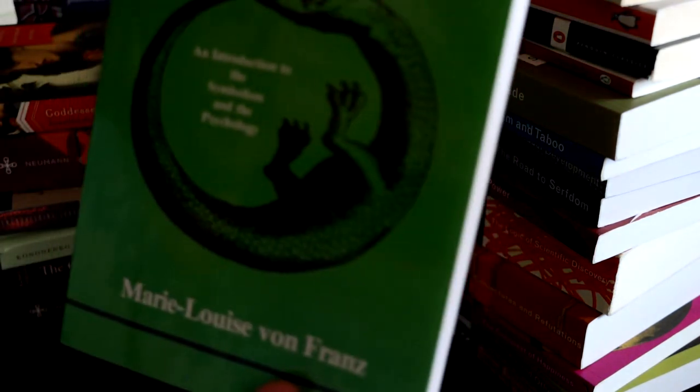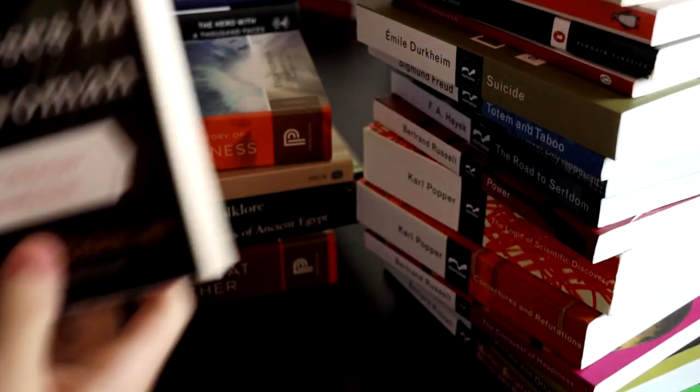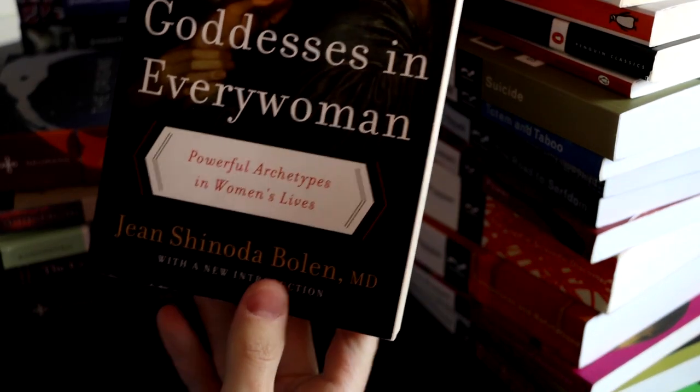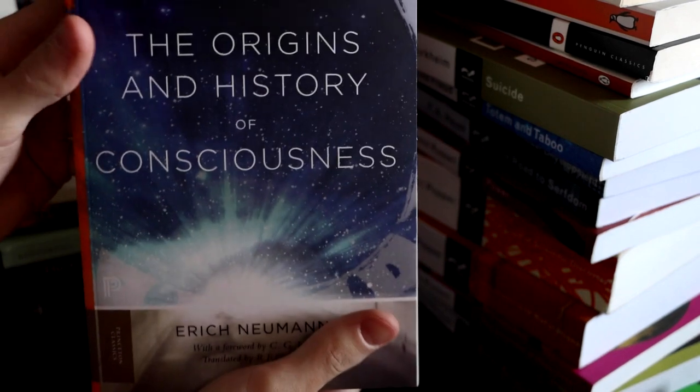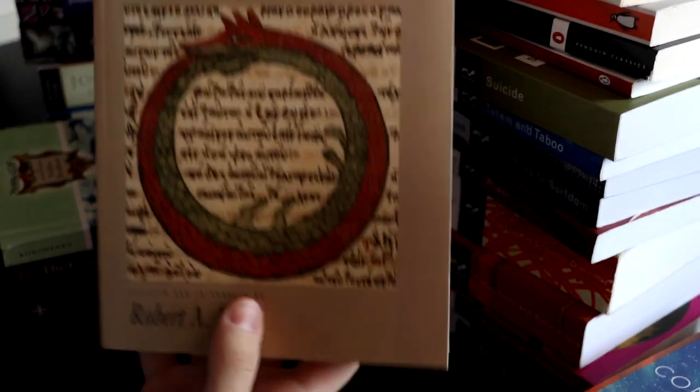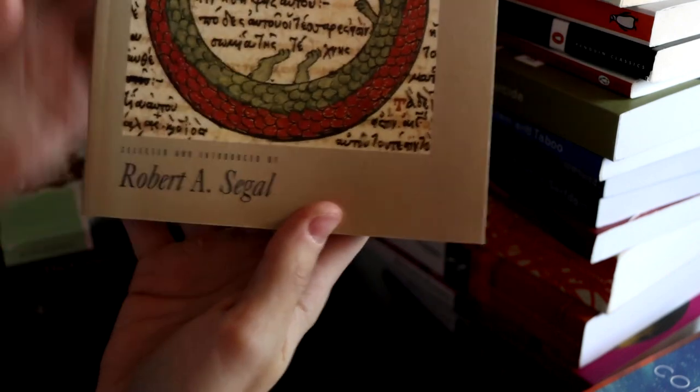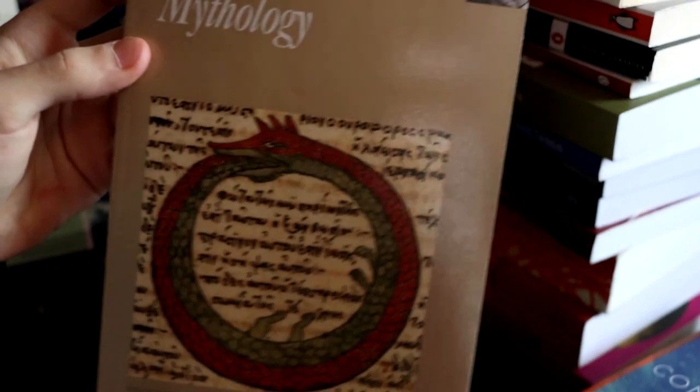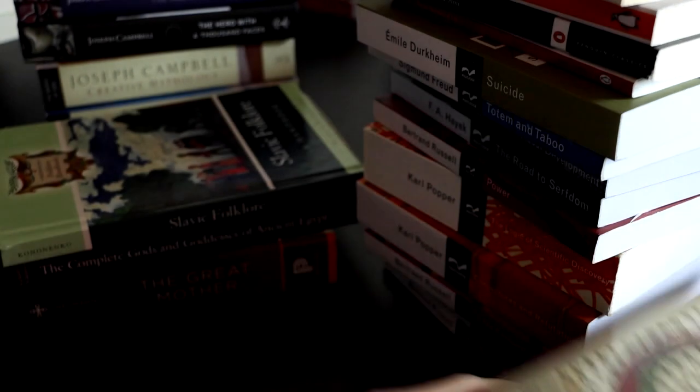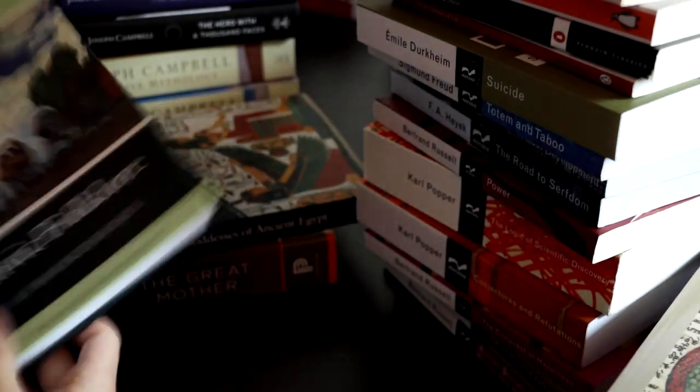Alchemy, An Introduction to the Symbolism and the Psychology by Mary Louise von Franz. Goddess and Every Woman, Powerful Archetypes in Women's Lives. The Origins and Histories of Consciousness. Jung on Mythology. This is just, it's by Robert A. Segal. It's a collection of different Jungian scholars about what Jung thought about mythology, interpreting Jung's book.